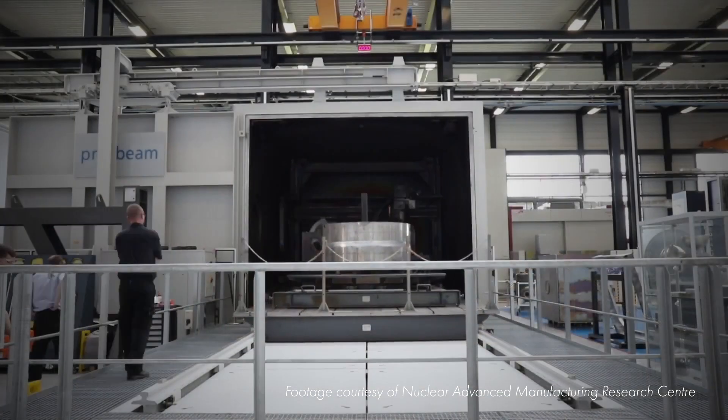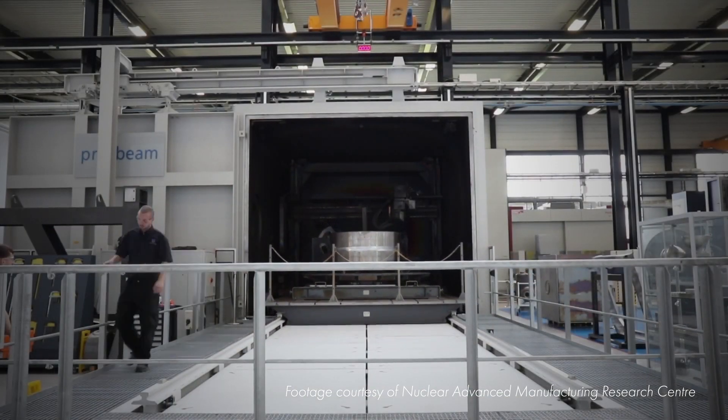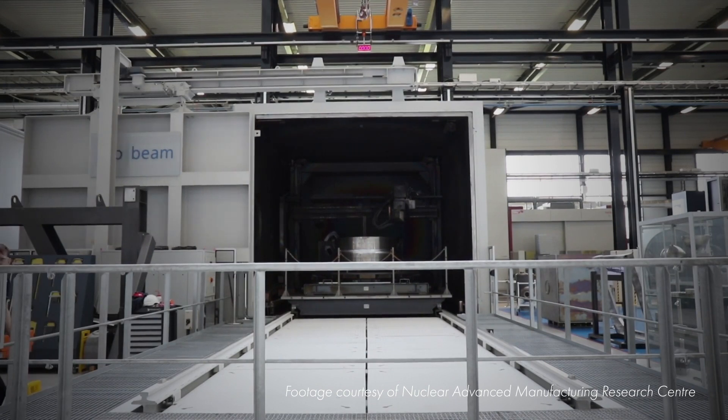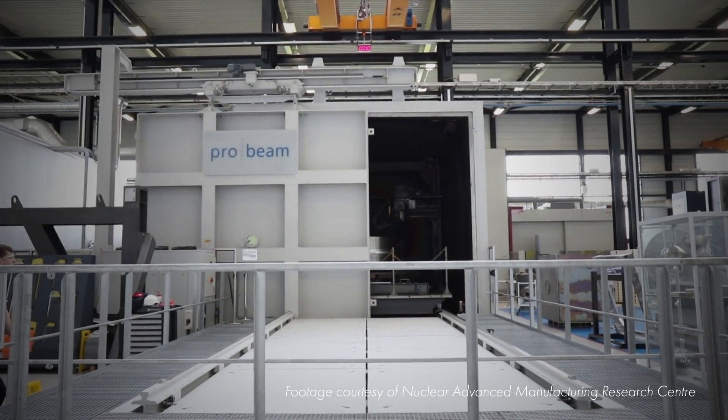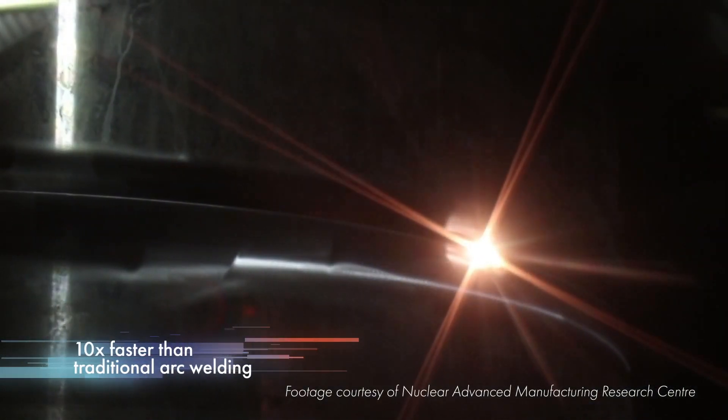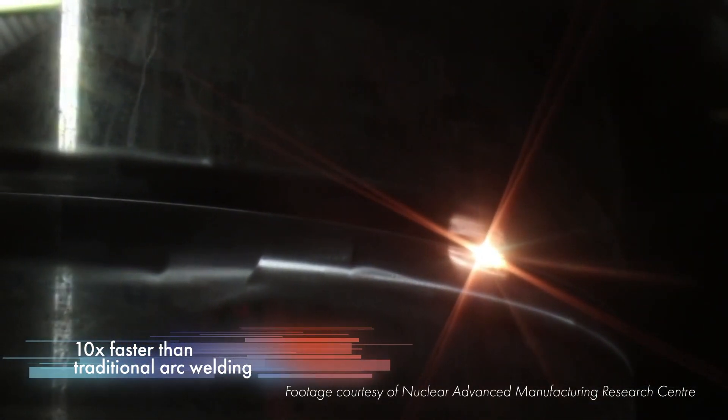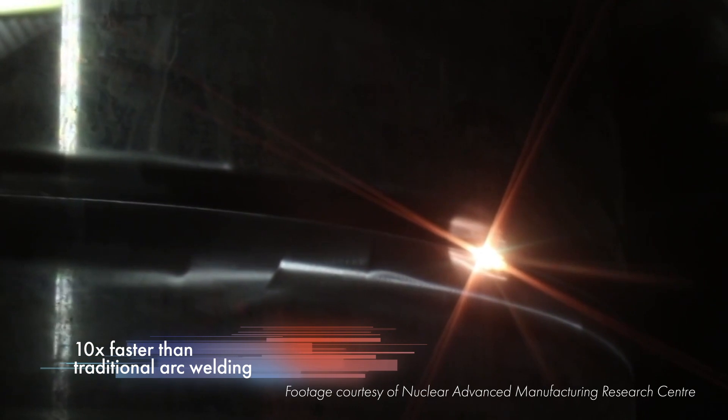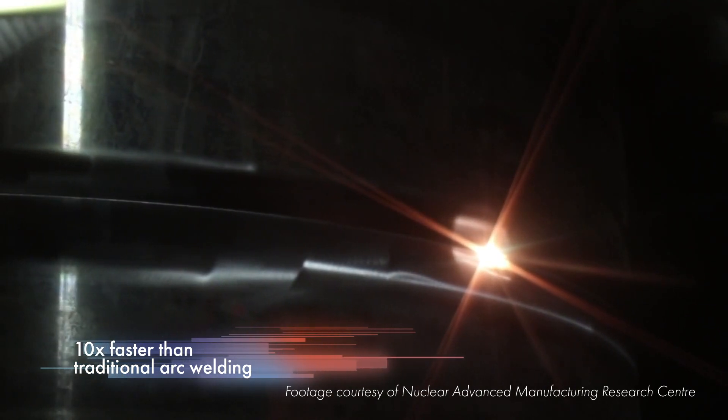This advanced welding process performed in a vacuum chamber is completed in a single weld pass with no filler material required. The EB welding process can perform these thick section girth welds 10 times faster than traditional arc welding. What used to take weeks can now be completed in minutes.